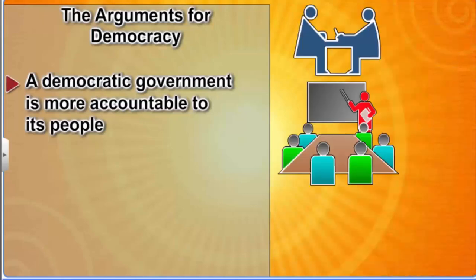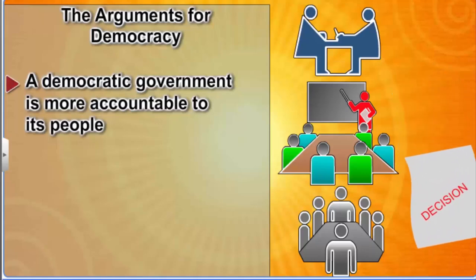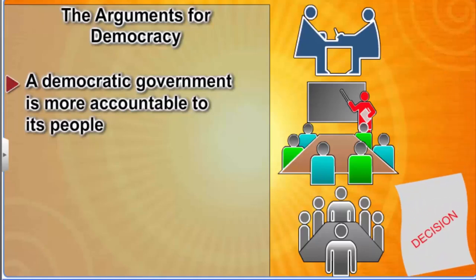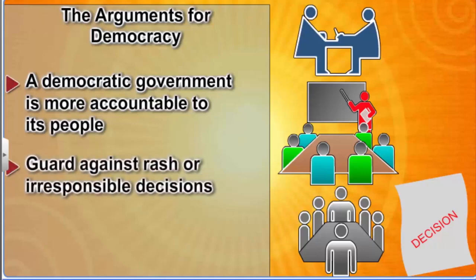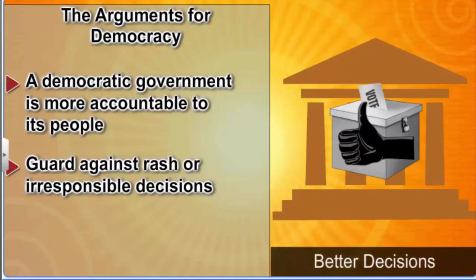Democratic decisions involve a series of consultations, meetings, and discussions among many persons. Though such a decision-making process is time consuming, it helps a democracy guard against rash or irresponsible decisions. That's our second argument in favor of democracy: a democratic government can ensure better decisions.